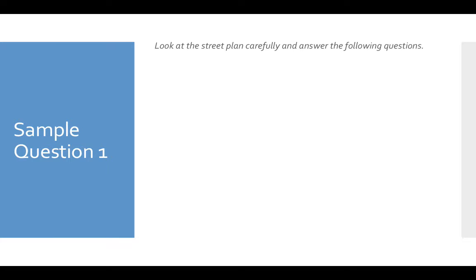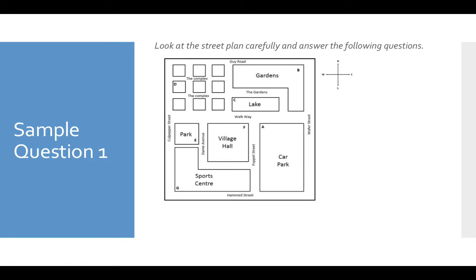So sample question one. Look at the street plan carefully and answer the following questions. Here we've got a very basic street plan with some gardens, a car park, and a village hall. As you can see, there are little letters in the corners of each of these, and here we've got street names: Culpeper Street, Dame Avenue, Hammond Street. And here we've got the compass directions already given to you, so that's one less thing to remember. So we've got north, east, south, west.